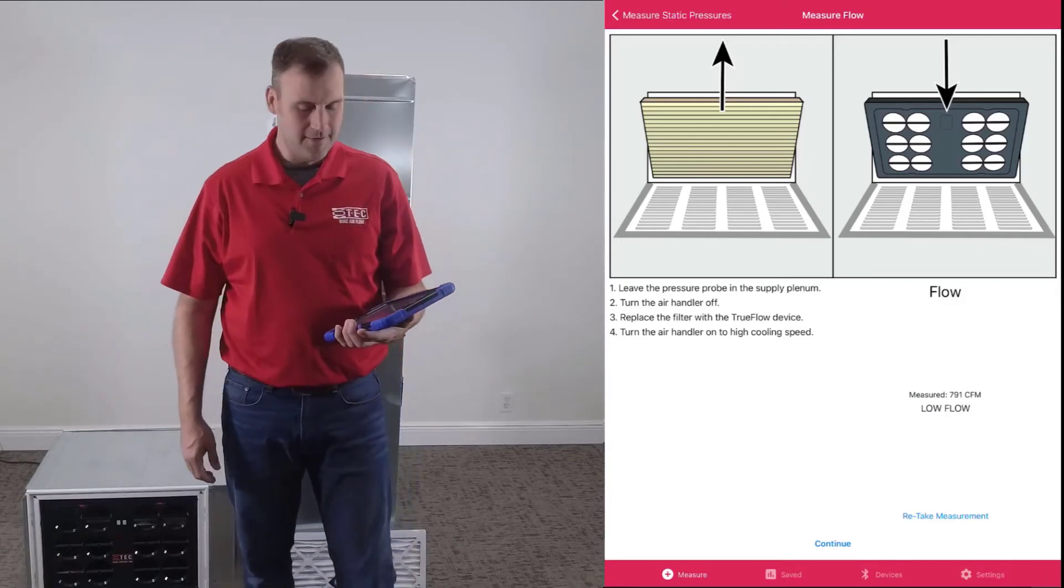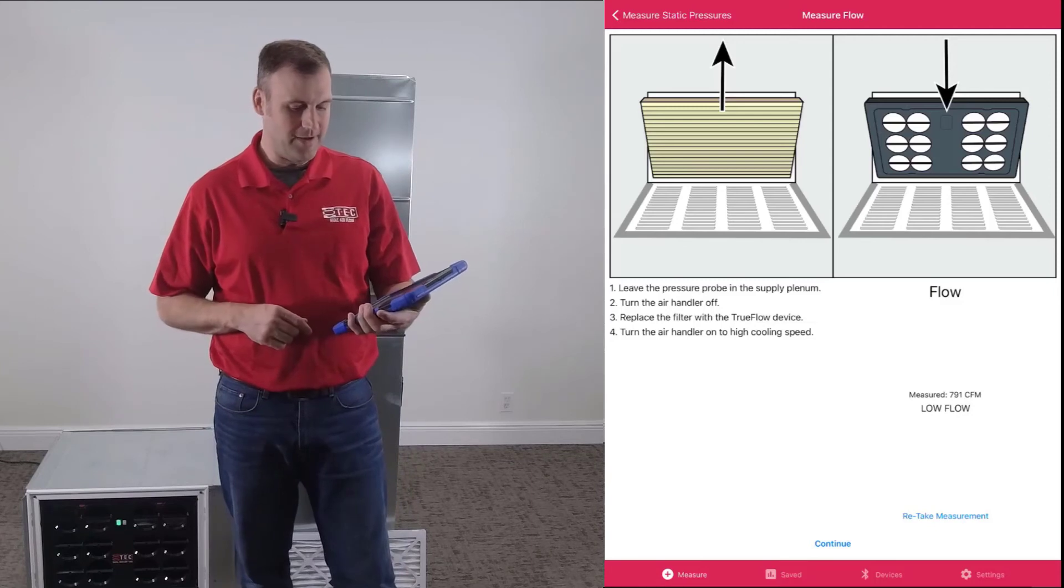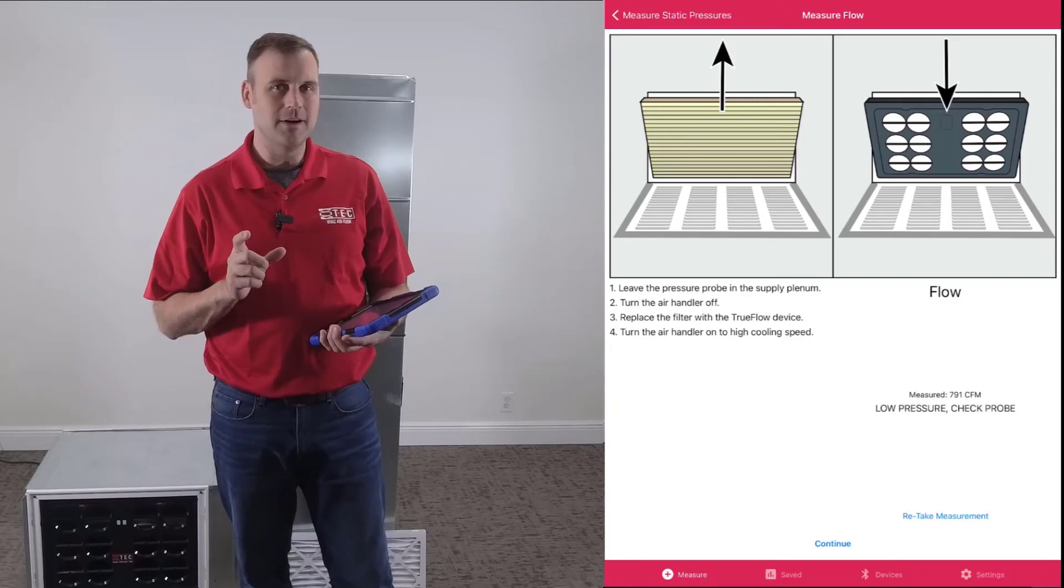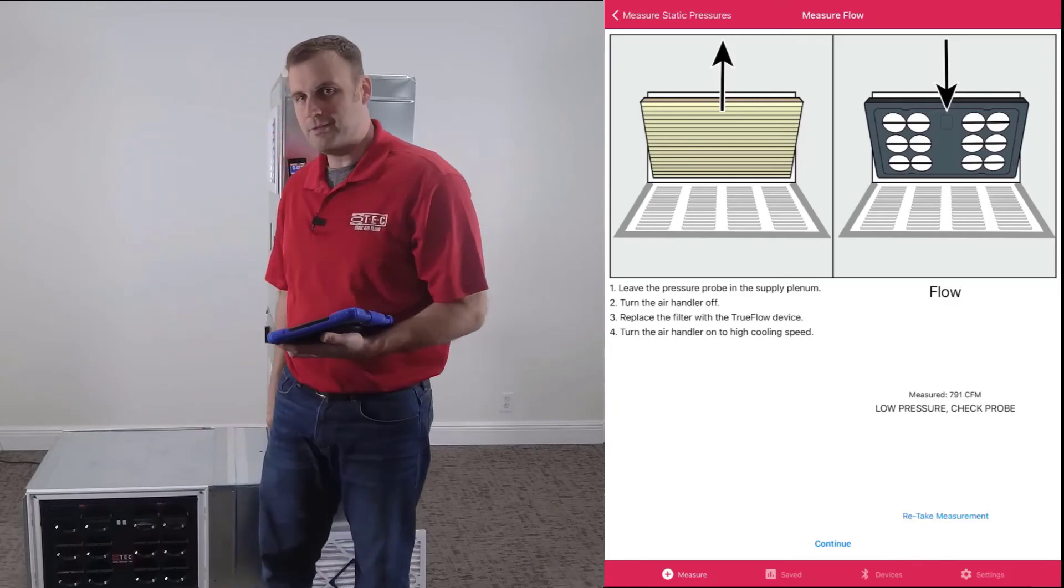Now turn the system off. We have measured 791 CFM. That is the measurement of air moving through the system when the filter was in place.